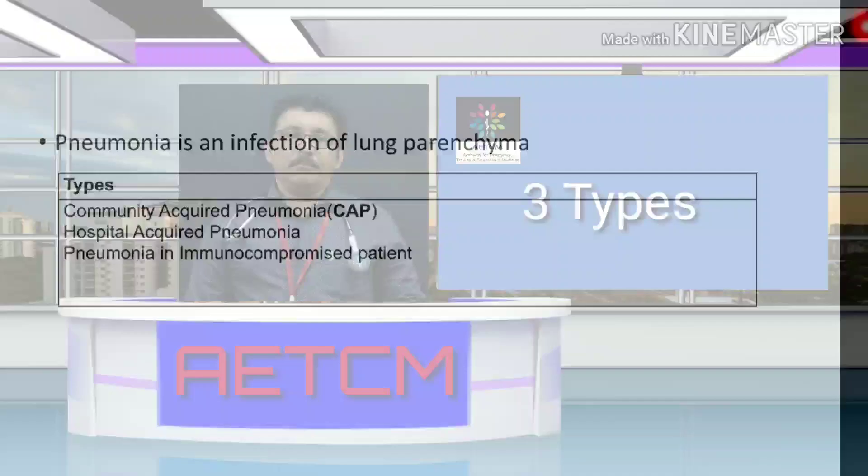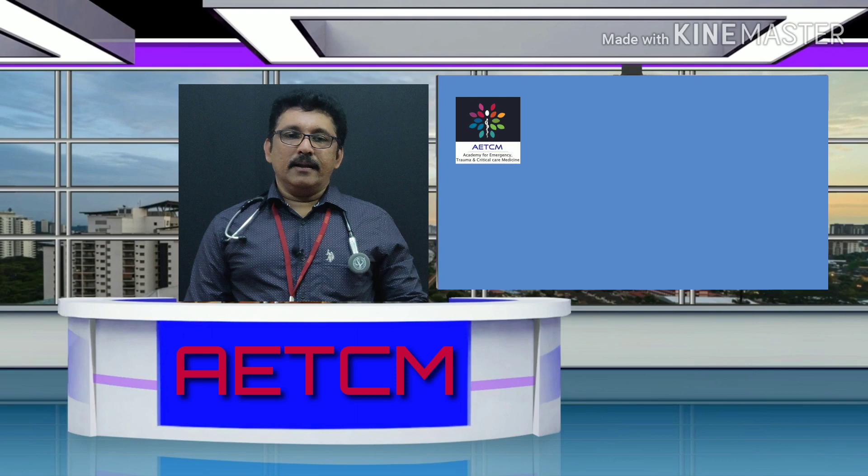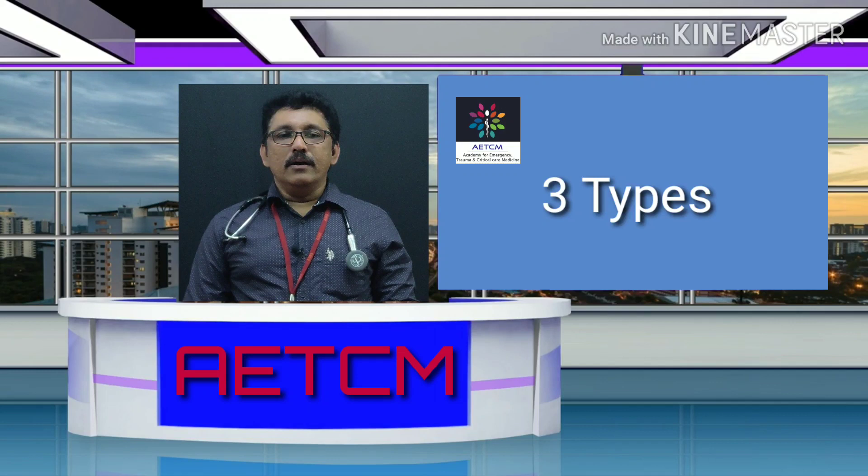There are three major types of pneumonia. One is community acquired pneumonia — acquired from the community. Second is hospital acquired pneumonia — acquired in a hospital. Third is pneumonia in an immunocompromised patient, such as a patient with HIV, treated with anti-malignant drugs, or having uncontrolled diabetes.